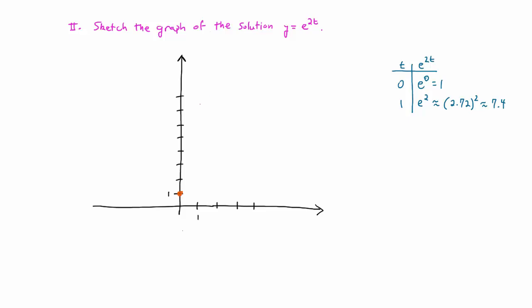And that gives us two points on our graph, 0, 1, and roughly 1, 7.4, which is about here.